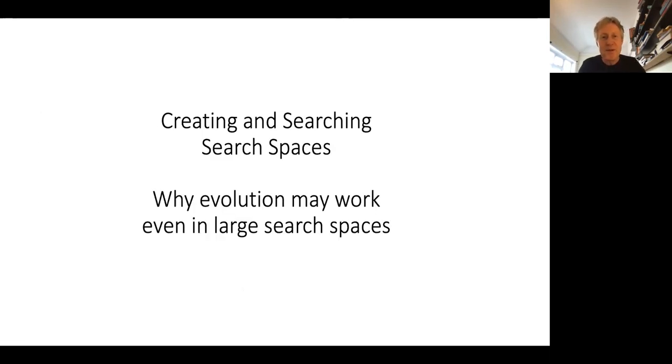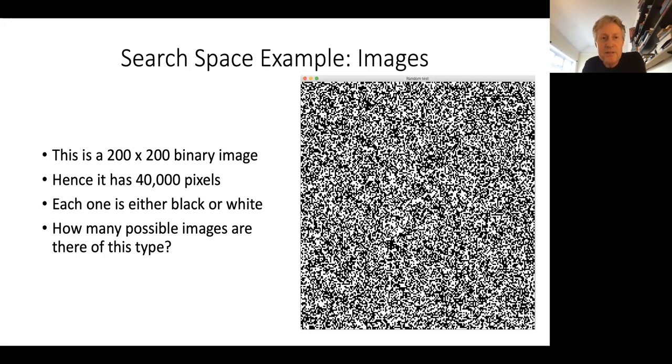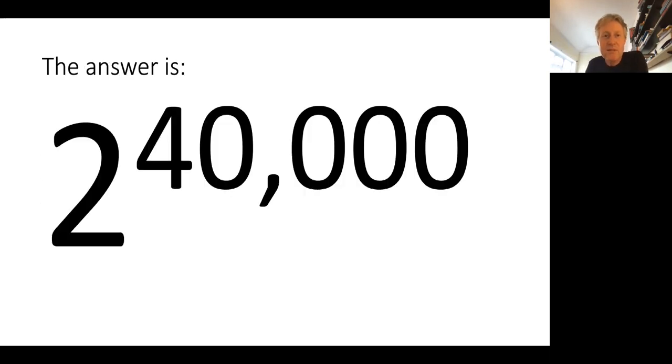I want to give some insight into why these things work so well. Very often we're doing search in really large search spaces, which might seem daunting. Here's an image, a 200 by 200 binary image with 40,000 pixels, each one black or white. How many possible images are there? The answer is two to the power of 40,000. The search space is 40,000 dimensional. The number of possible distinct solutions is two to the 40,000. It's a lot, a big number.